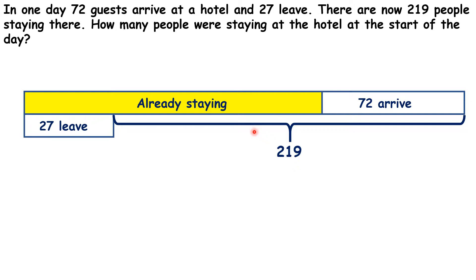Notice how I've drawn our bar model. The top line shows the total number of guests the hotel had, either because they were already there at the start of the day or because they arrived. Then the bottom line shows what happened to the guests — either they left or they are still staying there. So to start with, we can find the total number of guests who were at the hotel at some point.